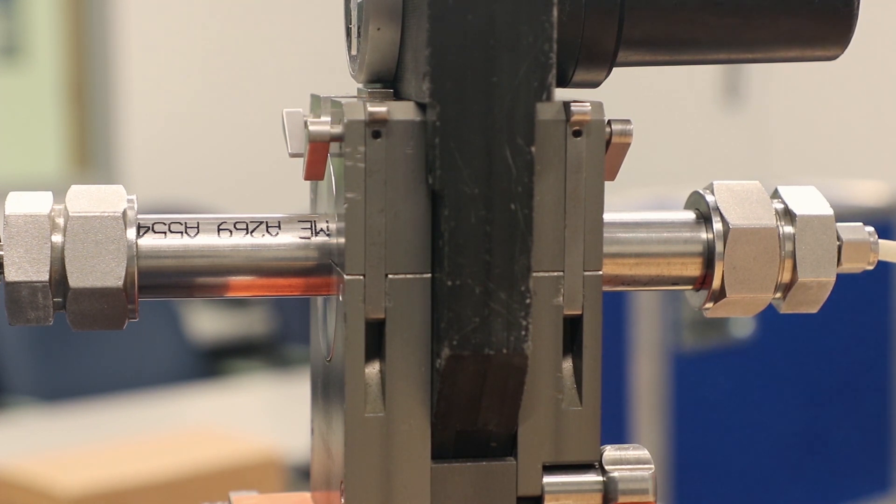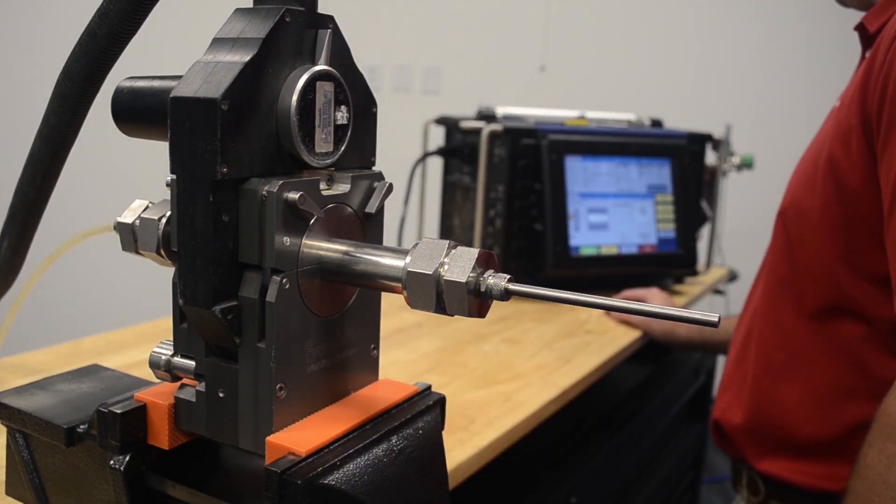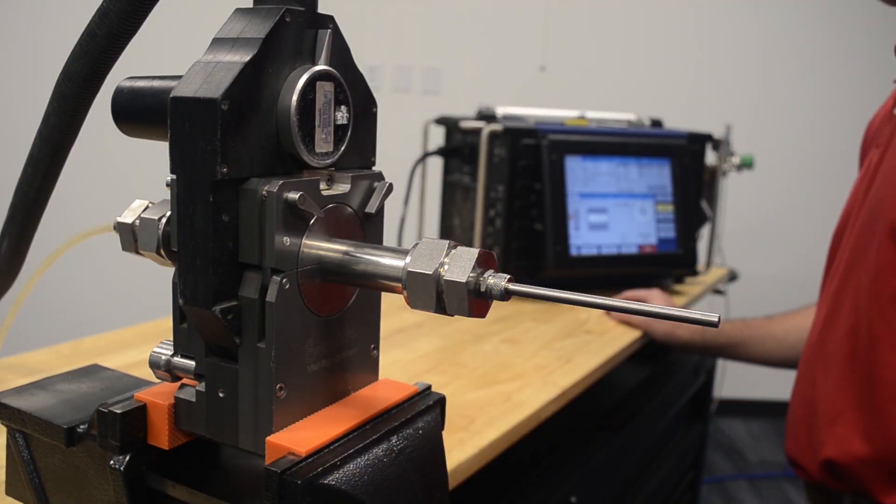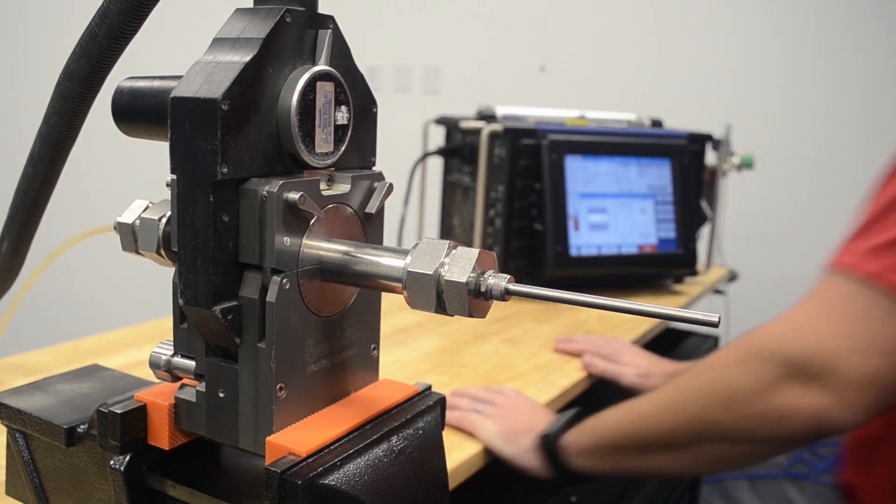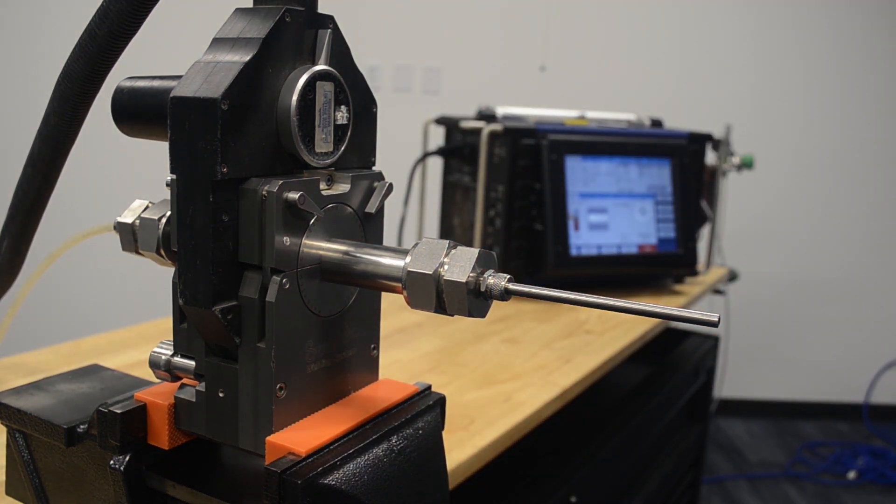All the setup leads to this. Once everything's positioned, the payoff comes with the press of a button. The green start button initiates the weld procedure. You may have to manually turn on the ID purge gas. Everything else is now controlled by the machine.